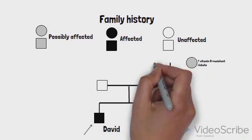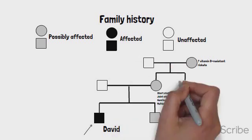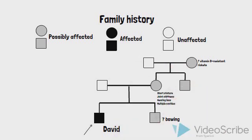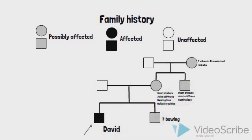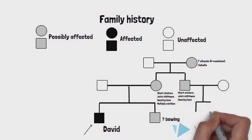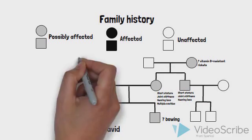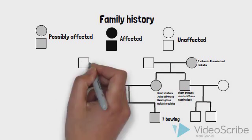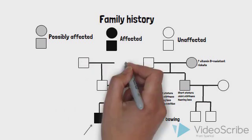David's maternal uncle has also always been shorter than his peers and suffers from joint stiffness and hearing loss. The uncle's two sons, aged 8 and 13 years, are healthy. David's father is healthy, and the paternal grandparents are both alive and well.